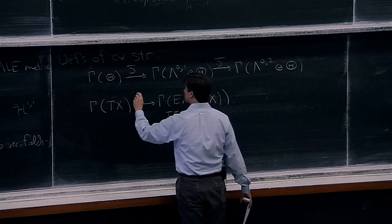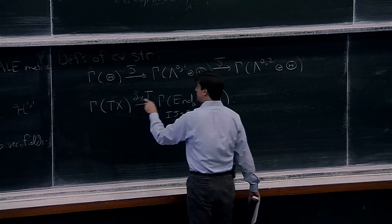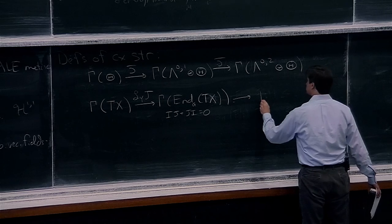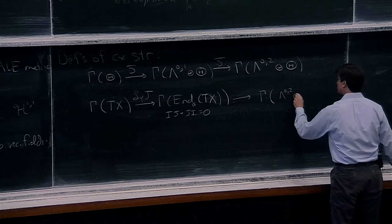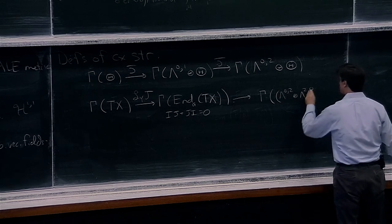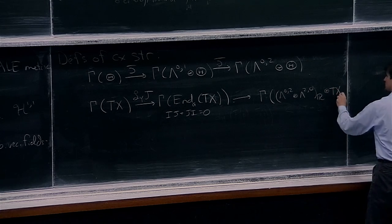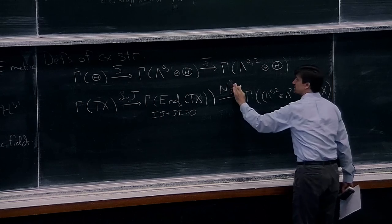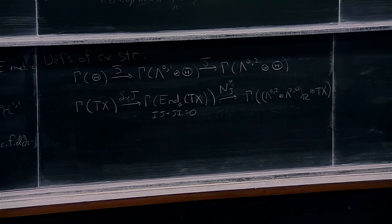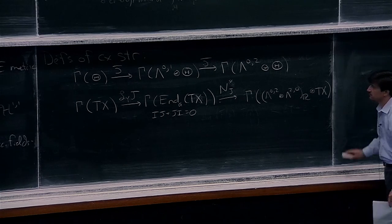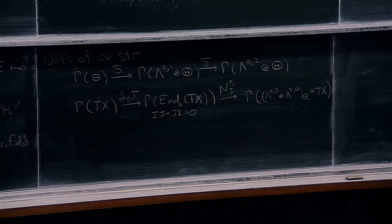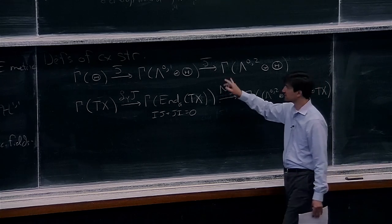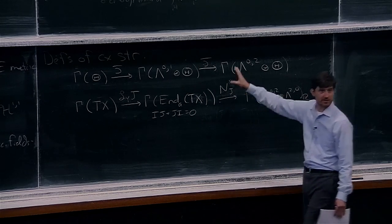The D-bar operator is the linearization of the Nijenhuis tensor — that characterizes integrable complex structures, those for which the Nijenhuis tensor vanishes. This is the linearized problem of deformation of complex structures. If X is compact, the first cohomology of this complex is isomorphic to H¹(X, Θ). But on a non-compact manifold, that's not the correct object for parametrizing deformations of complex structures.